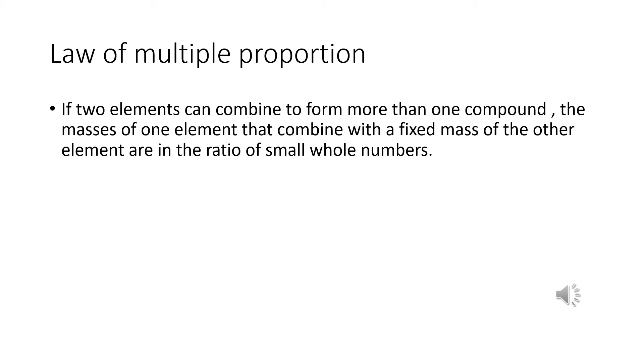Law of multiple proportion. This law was proposed by Dalton in 1803. According to this law, if two elements can combine to form more than one compound, the masses of one element that combine with a fixed mass of the other element are in the ratio of small whole numbers.